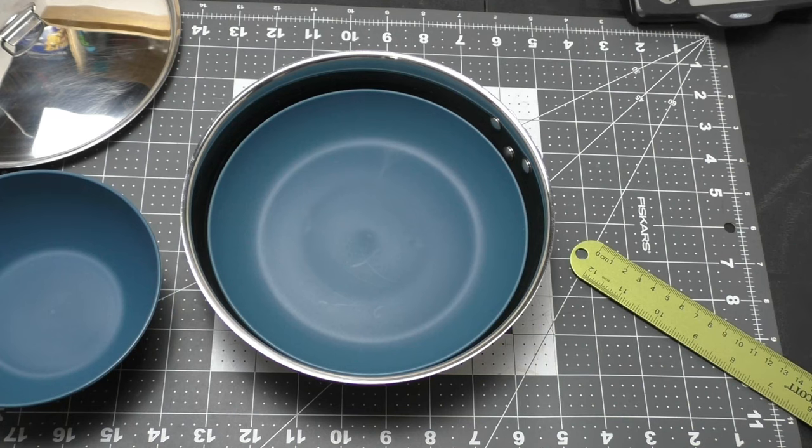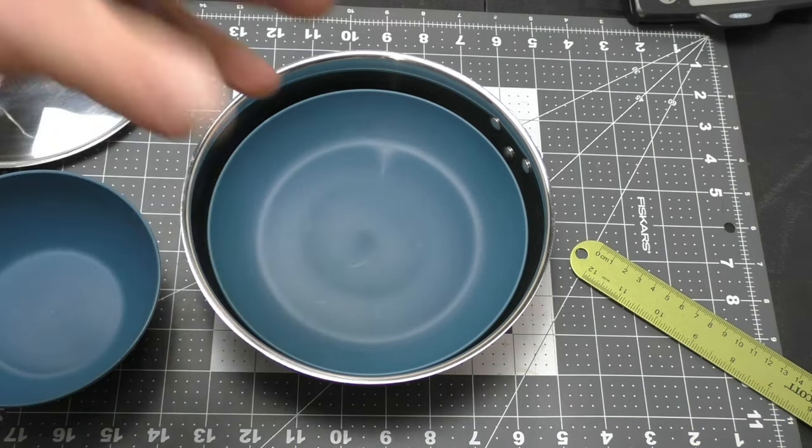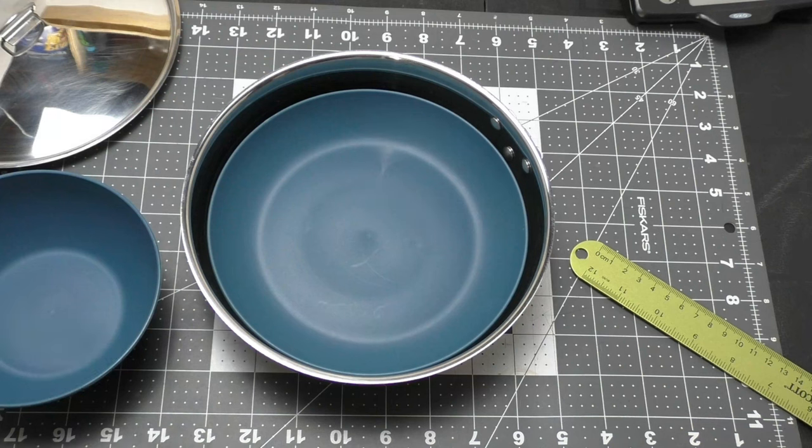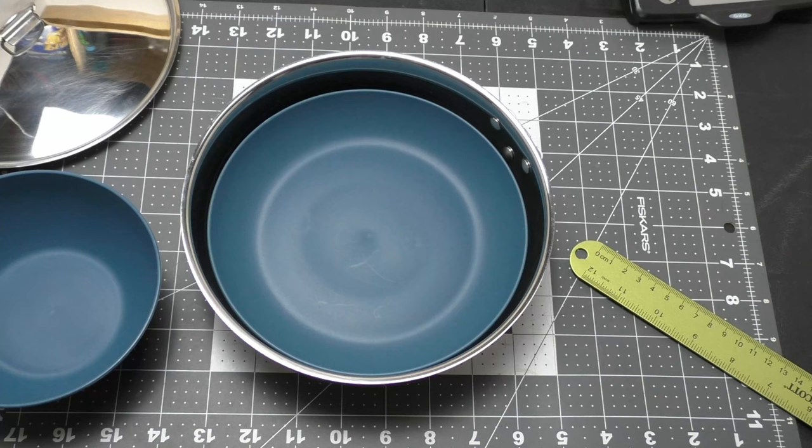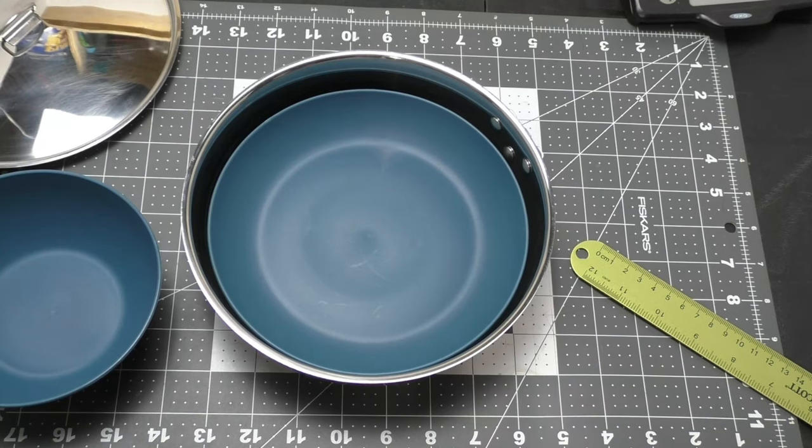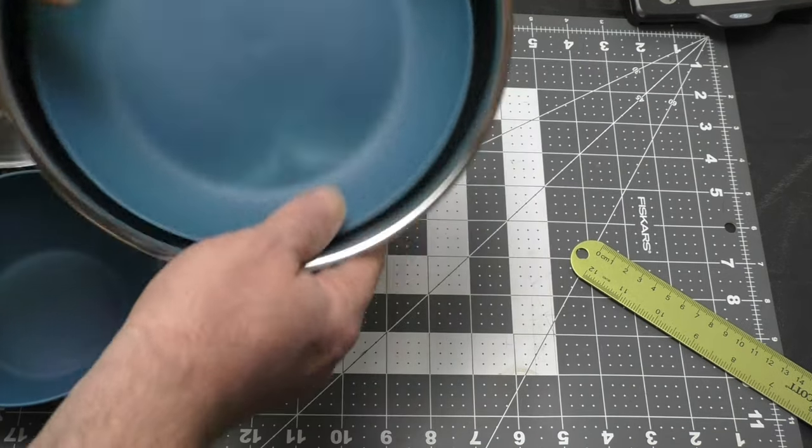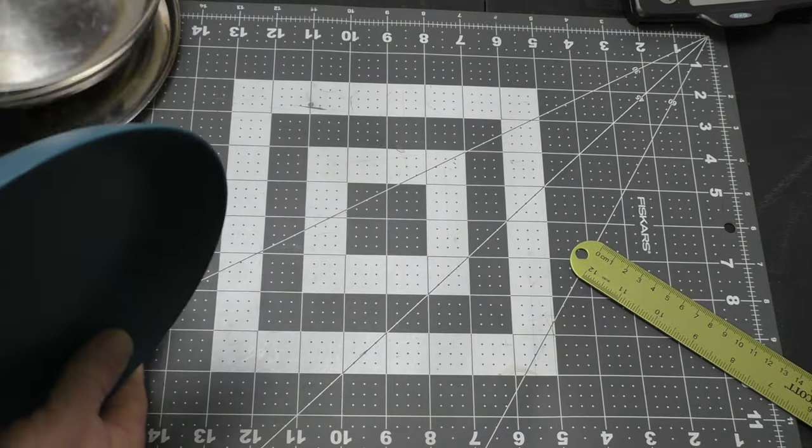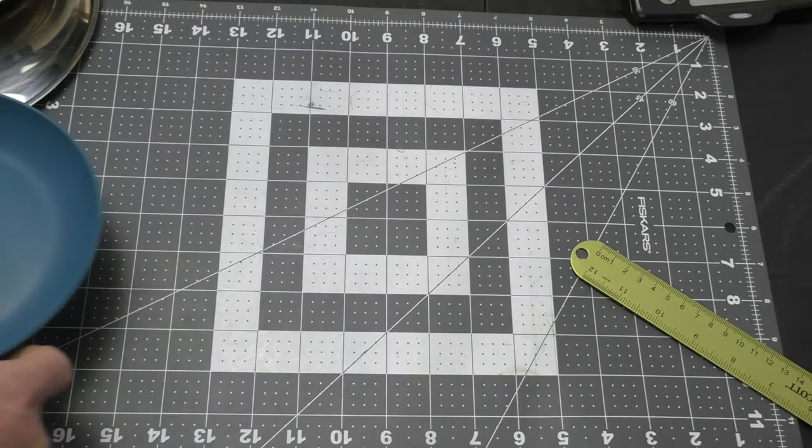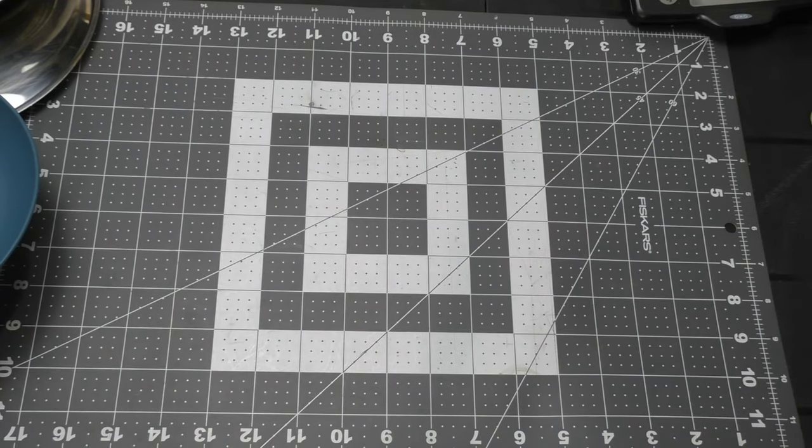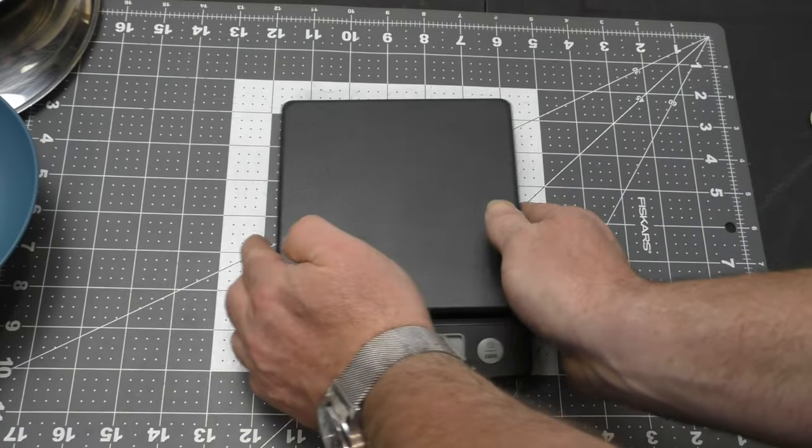I found a link on the Walmart website to these. They come in blue or pink. So boy or girl colors. So if you can't find them in your local Walmart, maybe you can order them on their website and you'll be all set. But let's see how much these weigh. They're pretty light. Let me get my scale in here.